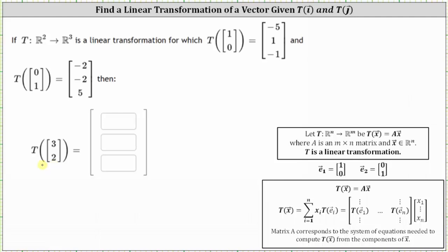We first need to find the transformation matrix, where if the linear transformation is given by T of vector x equals matrix A times vector x, we can determine matrix A — the transformation matrix, or standard matrix — by determining the transformations of the standard basis vectors, often referred to as e sub 1 and e sub 2 in R2.